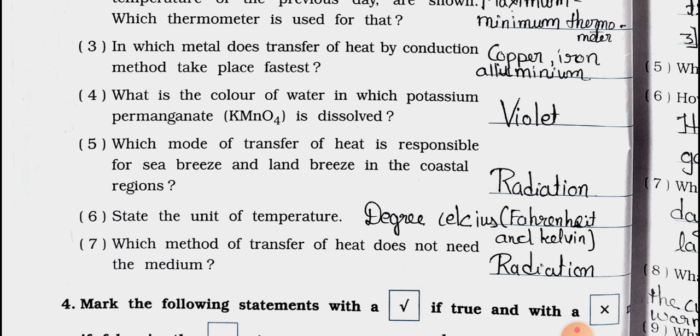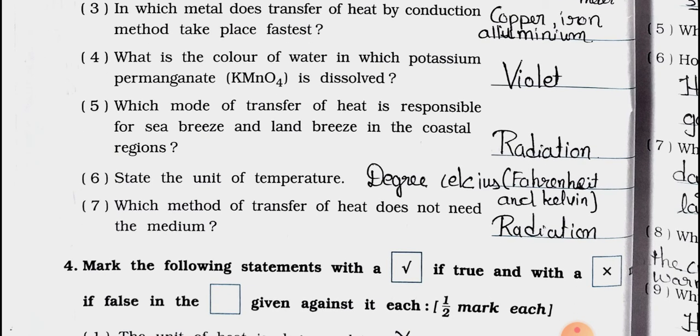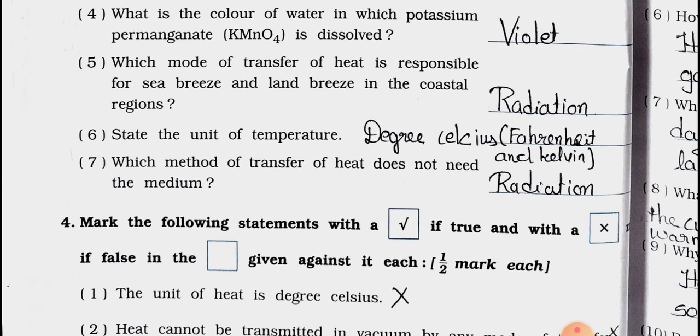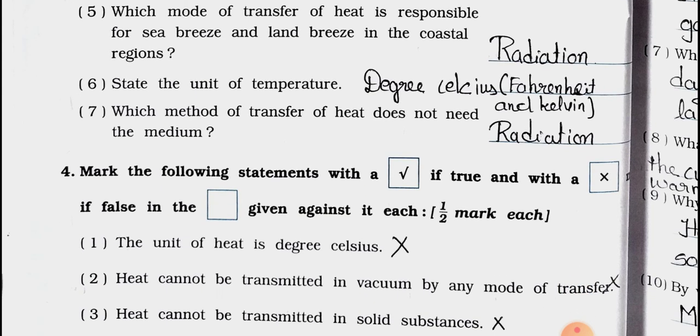Number 4: What is the color of water in which potassium permanganate is dissolved? You have to remember potassium permanganate color, KMnO4 molecular formula. The color of water is violet. Number 5: Which mode of transfer of heat is responsible for sea breeze and land breeze in the coastal regions? Answer is radiation. Number 6: State the unit of temperature. The unit of temperature is degree Celsius, Fahrenheit, and Kelvin. Number 7: Which method of transfer of heat does not need the medium? Answer is radiation.